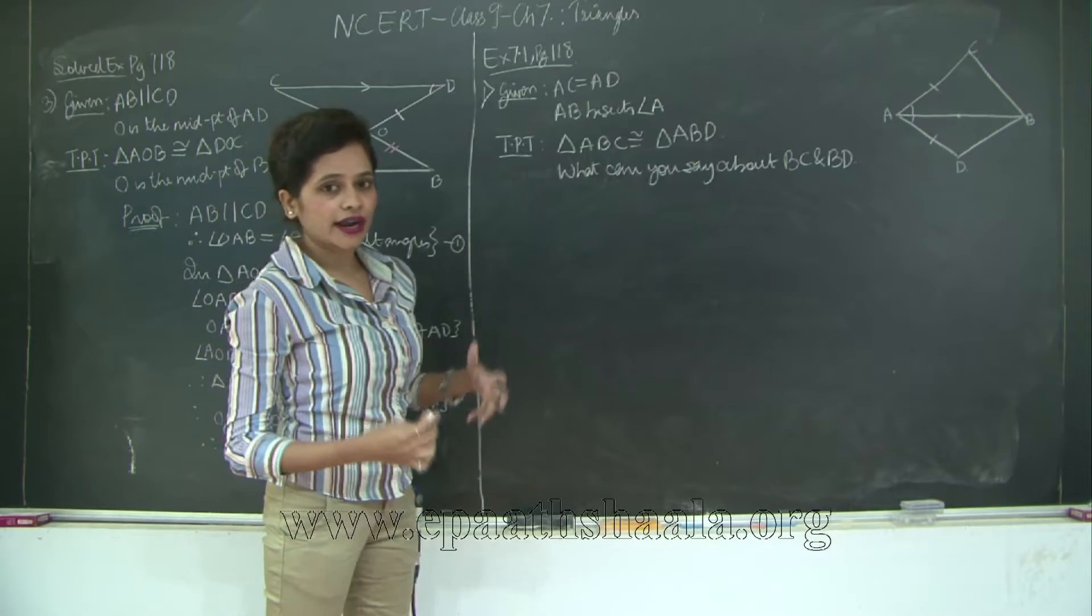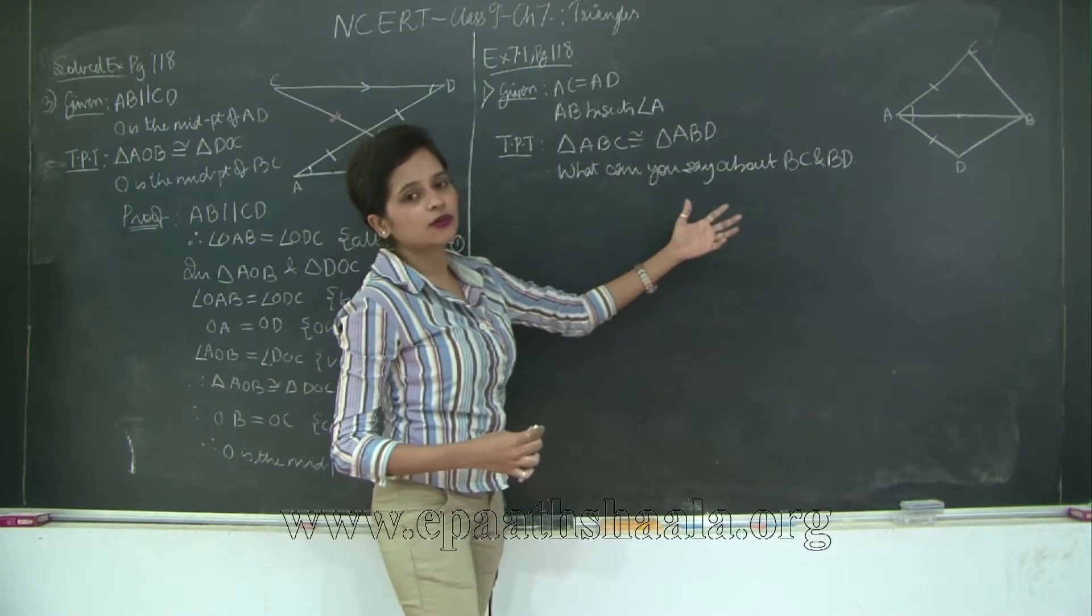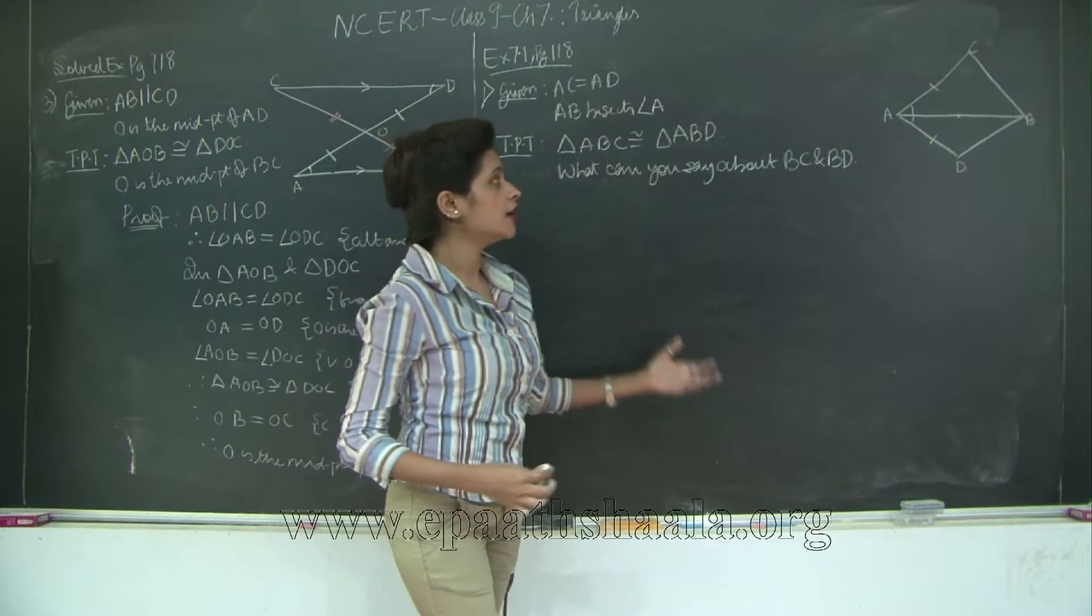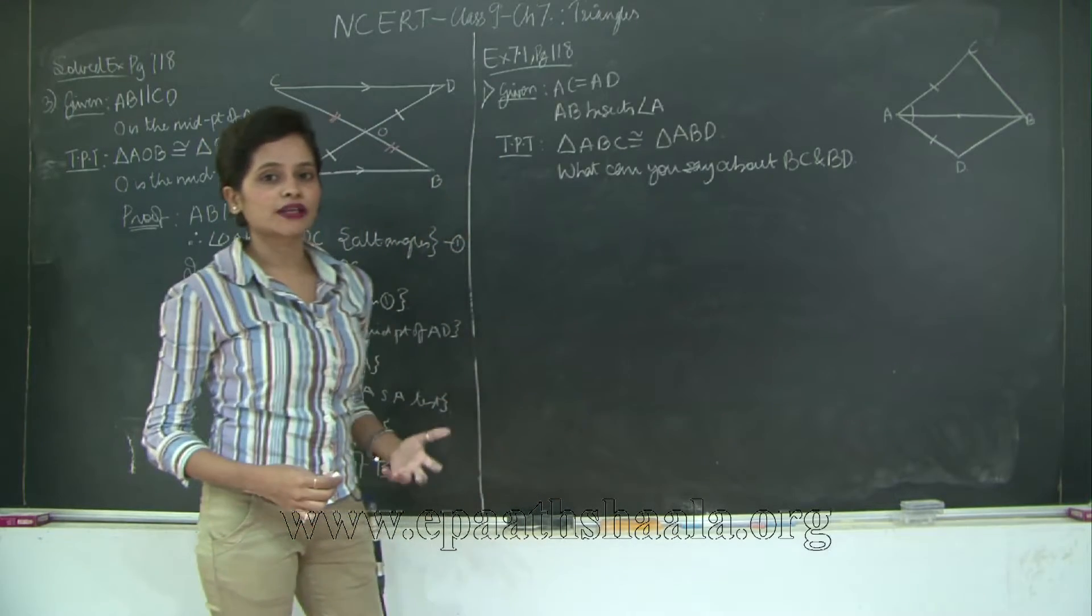Therefore the two triangles ABC and ABD are congruent by the SAS test of congruence. Now since the two triangles are congruent, we can prove that BC is equal to BD through the corresponding parts of congruent triangles.